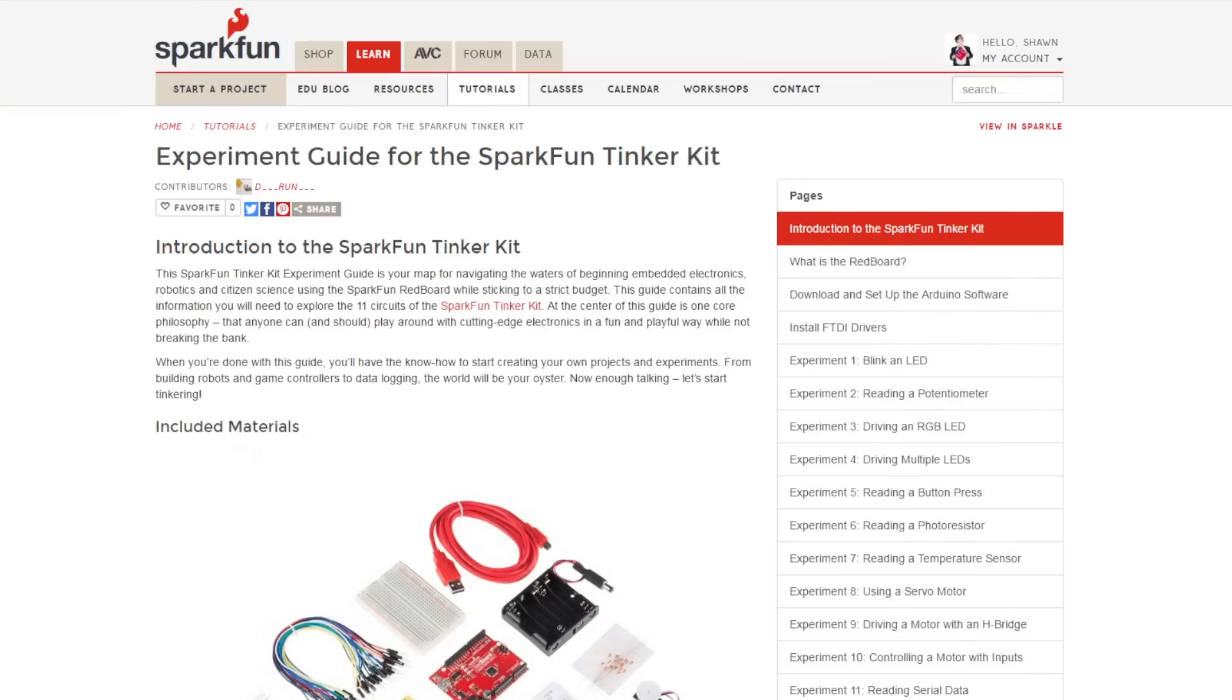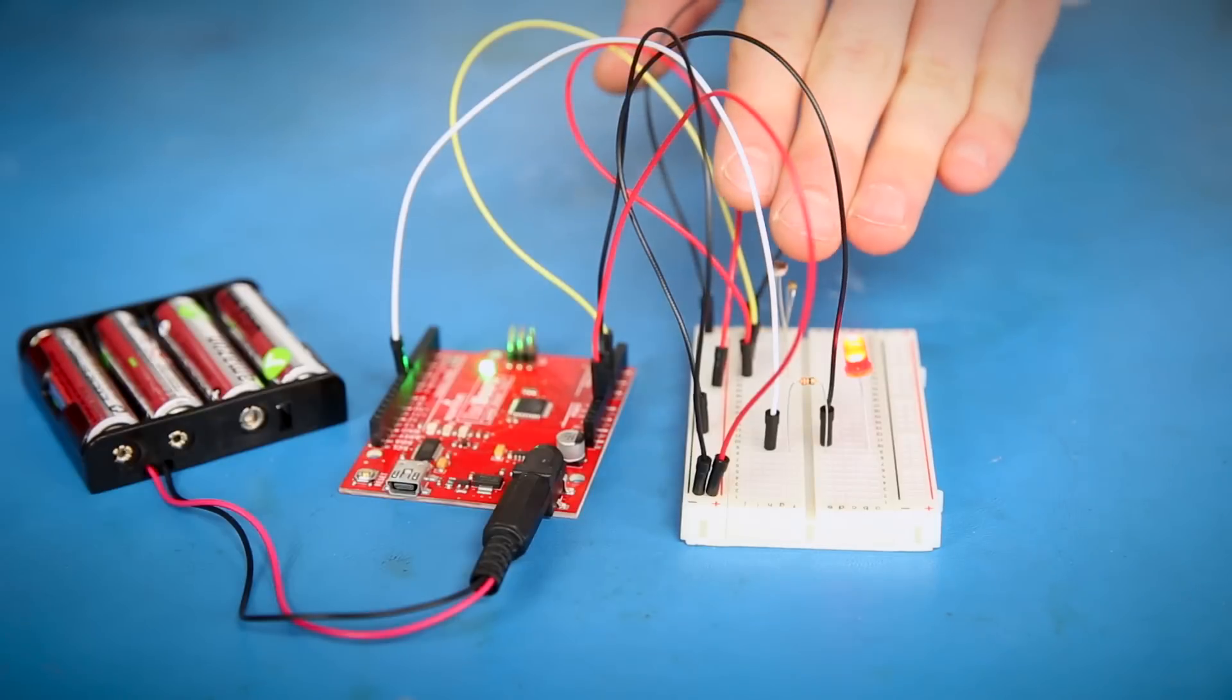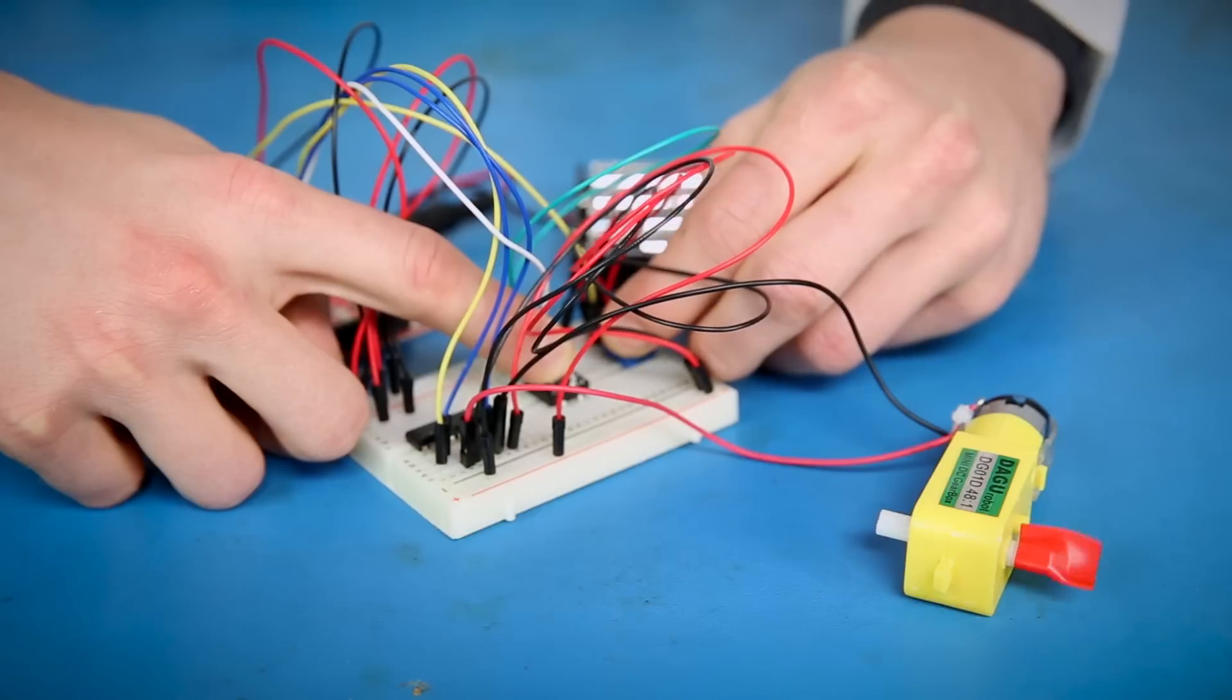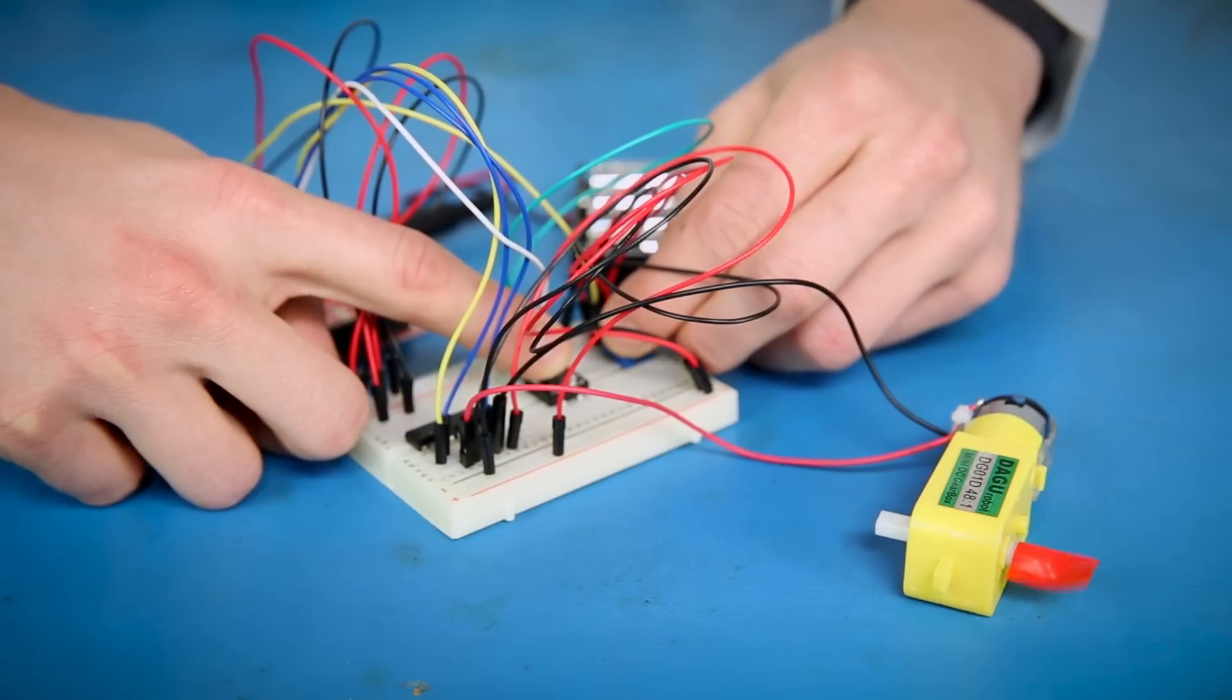A full online guide walks you through setting up and using the Tinker Kit with 11 different circuits. This includes things like making a nightlight and controlling the speed and direction of a motor through user inputs.